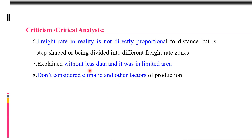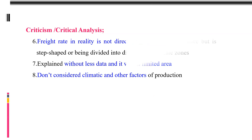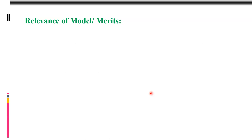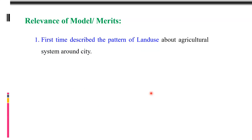One more point: he did not consider climatic and other factors of production. Climatic conditions are a main factor affecting land use patterns, and Van Thünen did not consider them — therefore, people rejected this model. But still, this model has its relevance and merits.